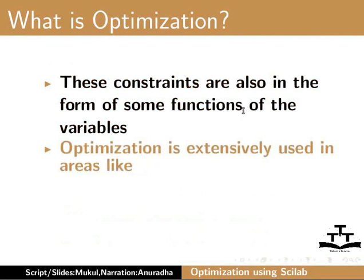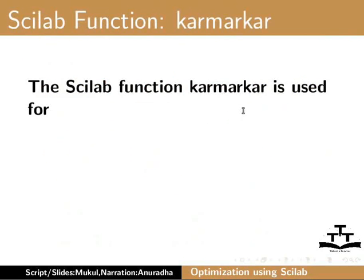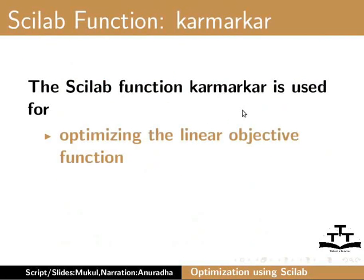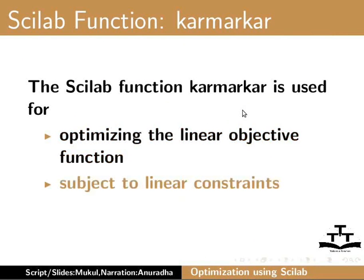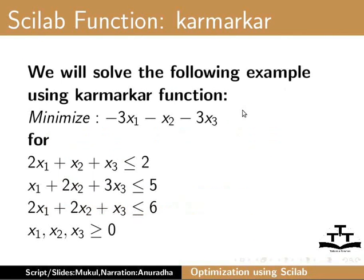Optimization is extensively used in the majority of engineering as well as non-engineering fields like economics, control theory, and operations research. The Scilab function Karmarkar is used for optimizing the linear objective function subject to linear constraints on the decision variables. We will solve the following example using the Karmarkar function.